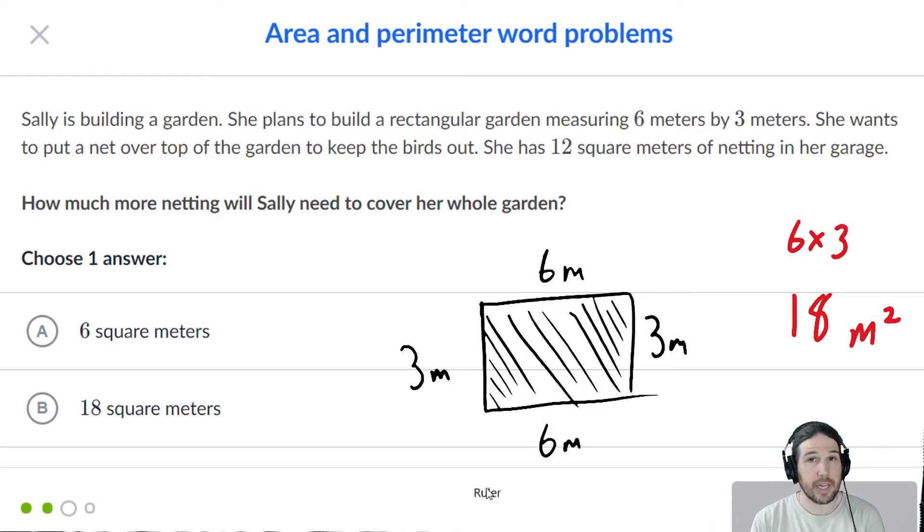We are also allowed to say meters squared because it turns out that when we say squared, we mean squared. But she already has 12, so we're going to take away 12, and we're going to duck and say six square meters is our total that we need, or that Sally needs. All good?